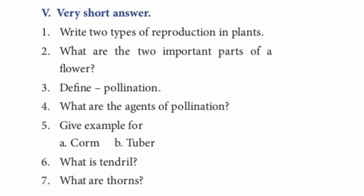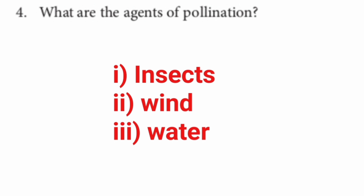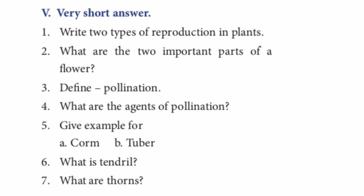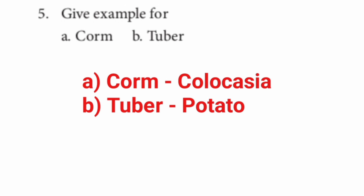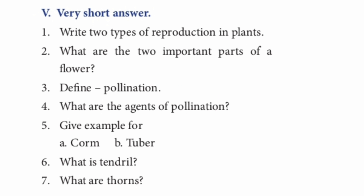Question 4: What are the agents of pollination? 1. Insects. 2. Wind. 3. Water. Question 5: Give examples for corm and tuber. Corm example — Colocasia. Tuber example — potato.